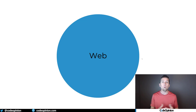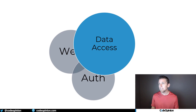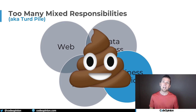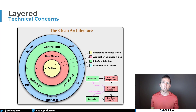First, I want to compare vertical slice architecture to what you're probably more familiar with, which is the separation of technical concerns. The reason we have layering in a system is this: if you've ever worked in a system that I call a turd pile, it's because it's mixing all these concerns together. In a web application or HTTP API, you have authorization, data access, and business logic. If there's no separation, it becomes really hard to manage and change without breaking other parts — a lot of coupling and mixed concerns. This is what drives people to layered architecture, onion architecture, clean architecture, etc.